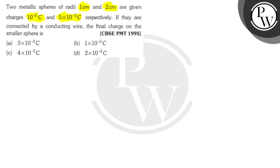If they are connected by a conducting wire, we need to find the final charge on the smaller sphere. We have a small sphere with a charge of 10 power minus 2 coulombs and radius 1 centimeter, and a larger sphere with a charge of 5 into 10 power minus 2 coulombs and radius 2 centimeter.